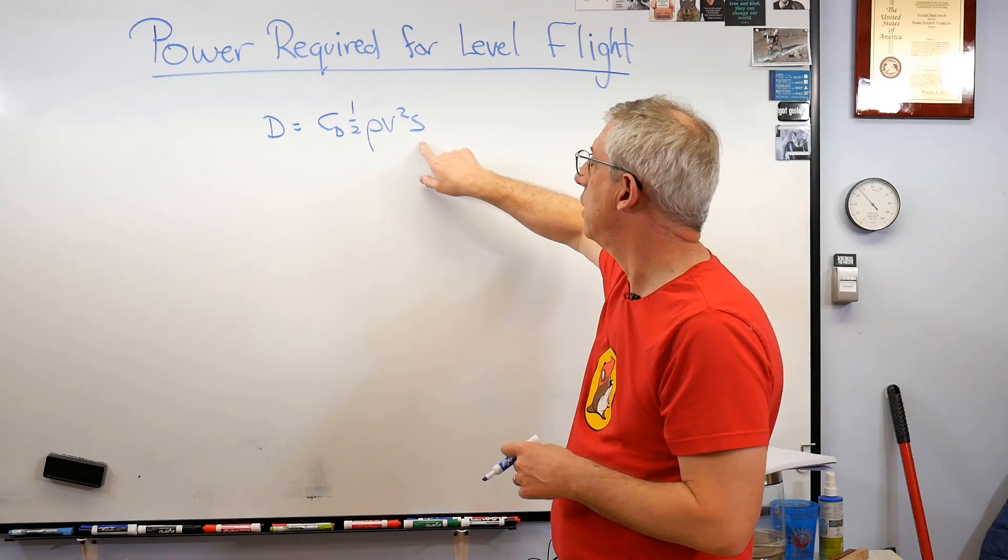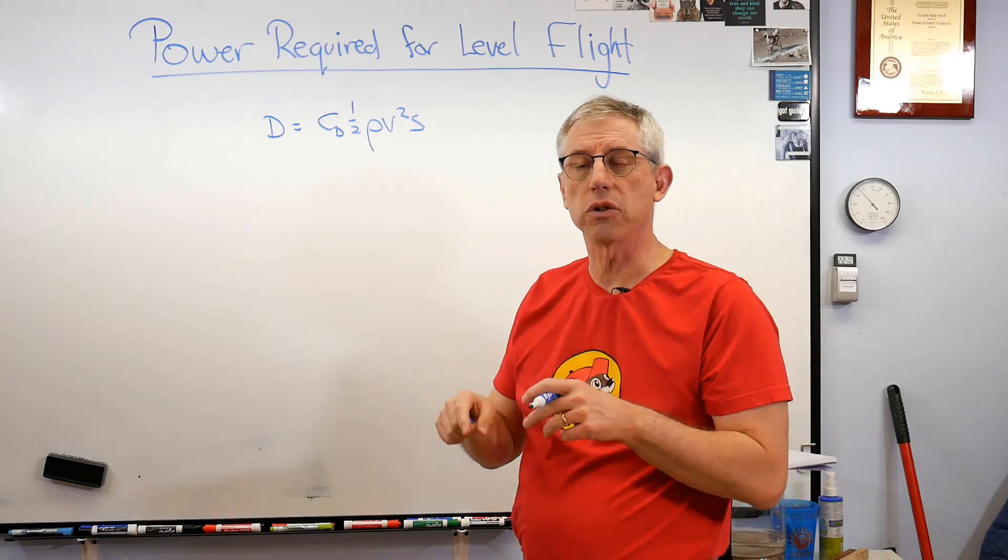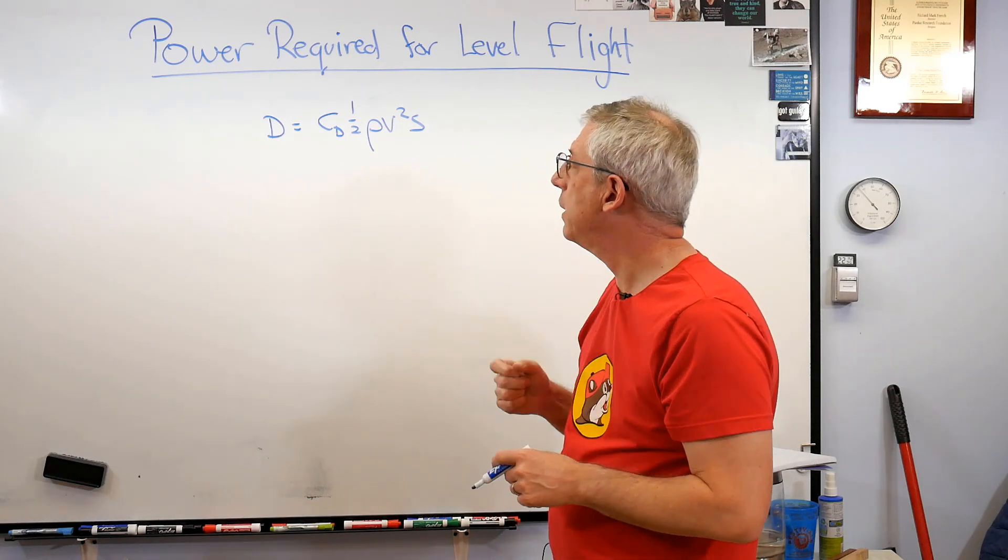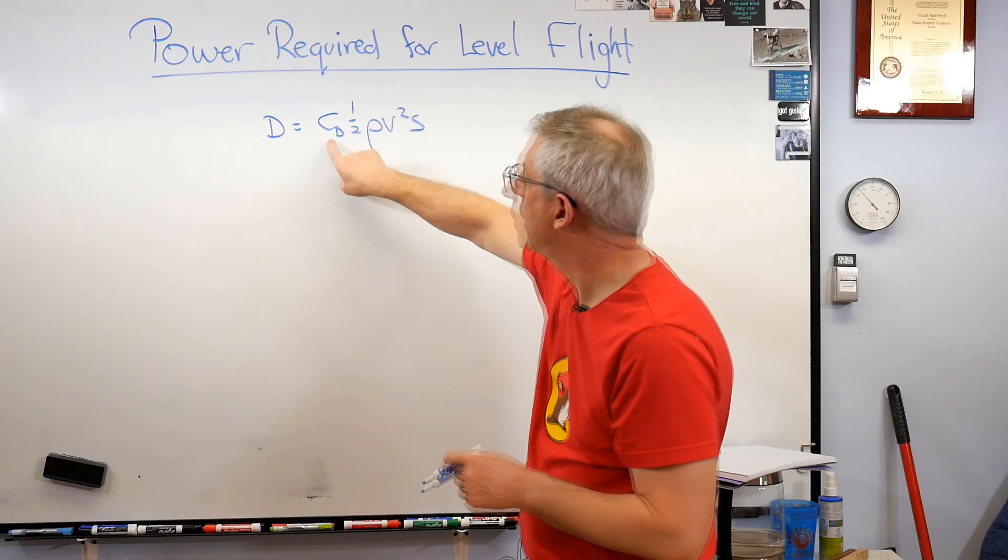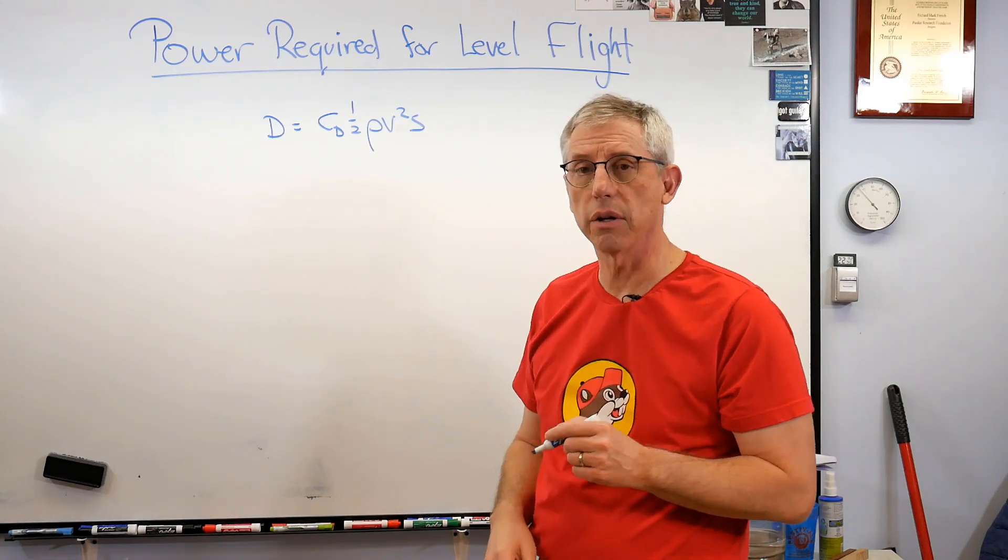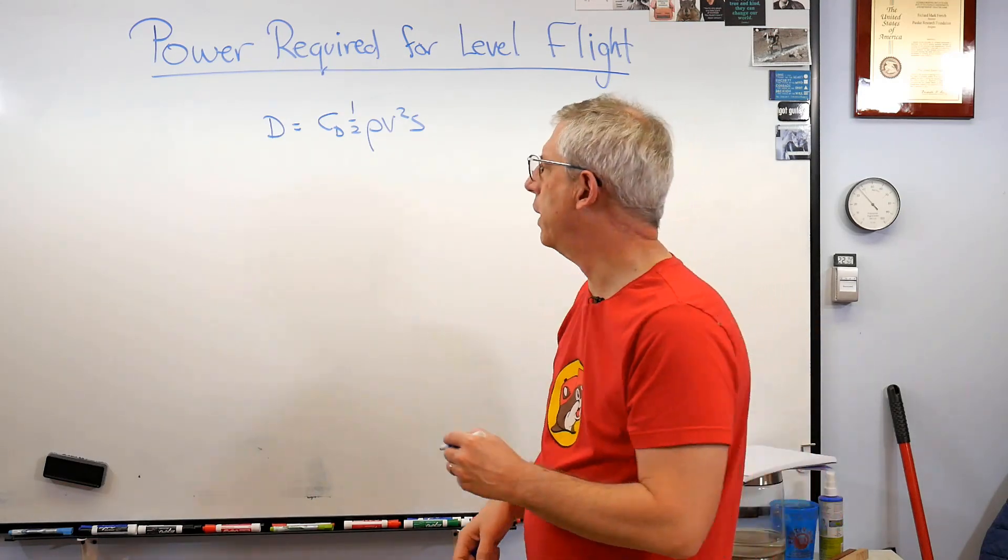Rho is about 1.2 kilograms per cubic meter if you're not too far above sea level. Velocity is just that and s is wing area - that's wing is called plan form area, it's the area you see when you look down at the top of the plane. Well that's okay but I mentioned there's two components to drag, to drag coefficient. Let's unpack that a little bit.